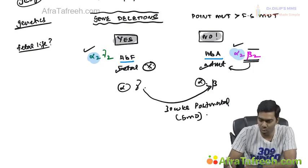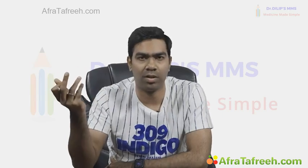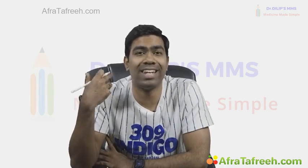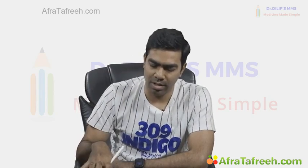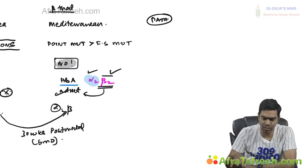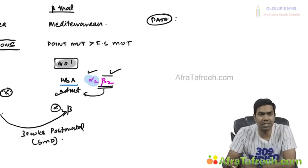Alpha thalassemias can affect both the fetus and adult life, but beta thalassemias can only manifest after birth — only after approximately six months after the child is born can you see clinical manifestations of beta thalassemia. Now, what is the pathophysiology of alpha and beta thalassemia?